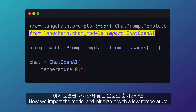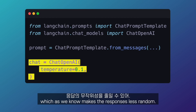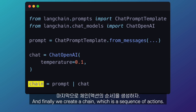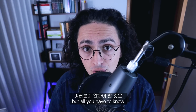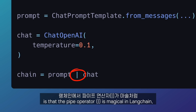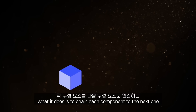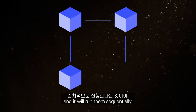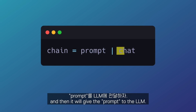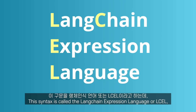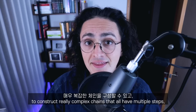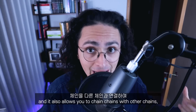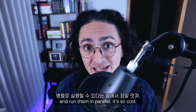Now we import the model and initialize it with a low temperature, which makes the responses less random. And finally, we create a chain, which is a sequence of actions. The pipe operator is magical in LangChain — it chains each component to the next one and runs them sequentially. First, it will format the prompt and then give it to the LLM. This syntax is called the LangChain Expression Language, or LCEL, and it is awesome because it allows you to construct really complex chains with multiple steps, and chain chains with other chains and run them in parallel.